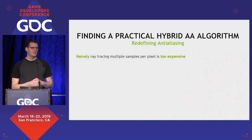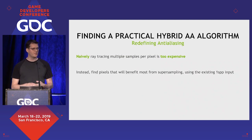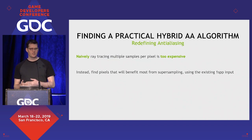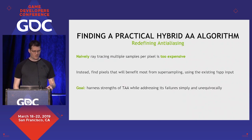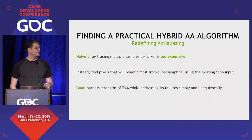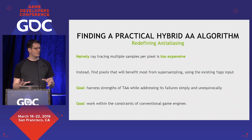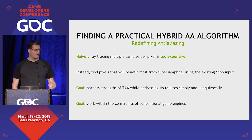But just having rays doesn't solve all our problems. Naively ray tracing multiple times per pixel is still too expensive, so we need to be more clever about how we use our rays. Instead, we want to focus rays on pixels that will really benefit from extra adaptive sampling — and we need to figure out where those pixels are. Our goal is also to work within the constraints of a conventional game engine, so that game developers can go out and use this right away now that they have DXR and RTX.